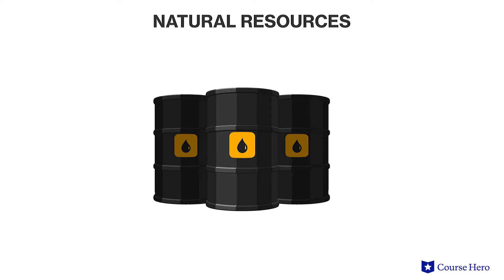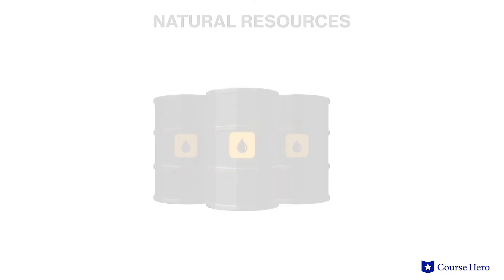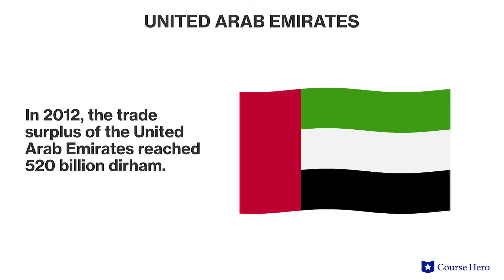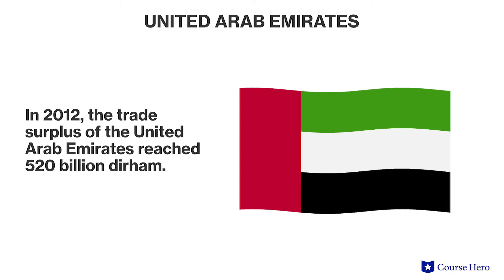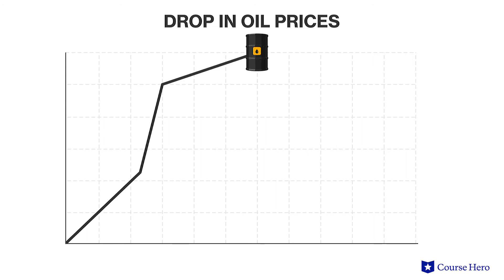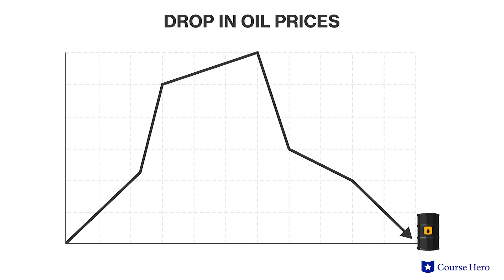Other countries, especially those that produce and export valuable natural resources such as oil and minerals, may run large trade surpluses and use their exports as the engine of their economic growth. For example, in 2012 the trade surplus of the United Arab Emirates, fueled by oil sales, reached 520 billion dirham — the nation's currency — which is about 140 billion US dollars. This can be a risky strategy because it renders the nation's wider economy vulnerable to price fluctuations in the main commodity traded. An oil exporting country may find its healthy trade surplus wiped out with a sudden drop in the price of oil, which can have disastrous societal consequences, especially if the exports were funding wider social and economic programs.